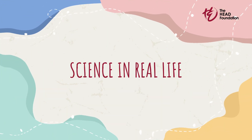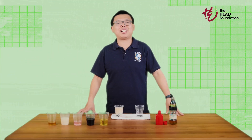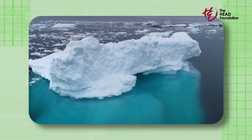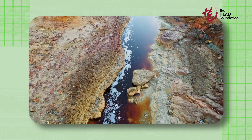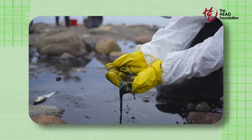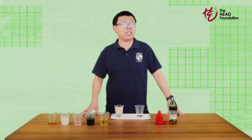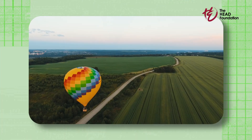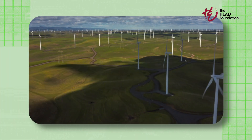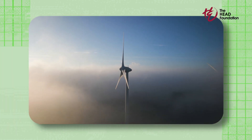Want to take this activity further? Encourage your students to introduce new liquids into the column and predict where they'll land. This promotes inquiry-based learning and builds curiosity. Density doesn't just show up in our drinks. Ask your students if they have seen pictures of floating icebergs or have heard about oil spills in the ocean. Why is it that ice and oil both float on water? That's because both oil and ice are less dense than seawater, so they float instead of sink.